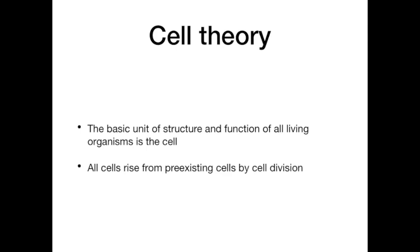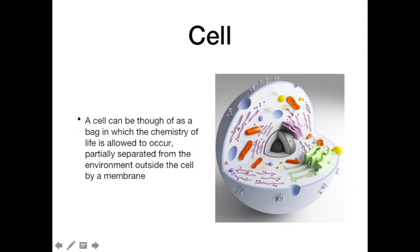Most animal and plant cells have diameters between 10 and 100 micrometers, although many, like human red blood cells, have a diameter of only 8 micrometers. We're going to look at many common characteristics, but according to each cell's role and function we can see differences. A cell can be thought of as a bag in which the chemistry of life occurs, partially separated from the environment by a thin membrane which surrounds all cells.